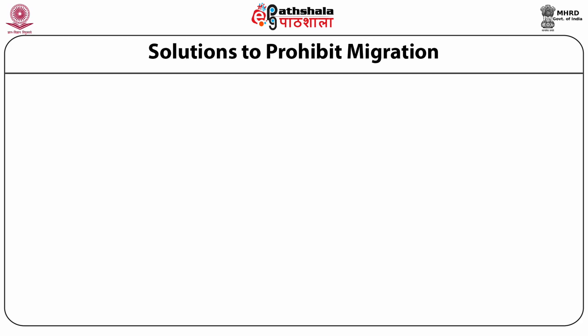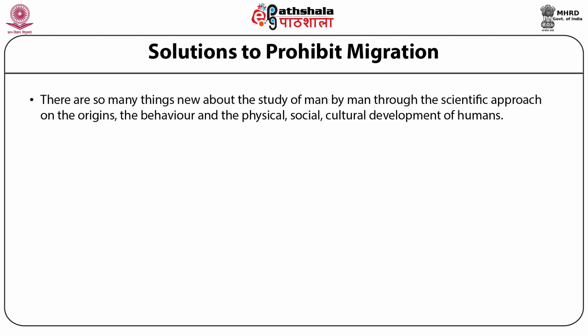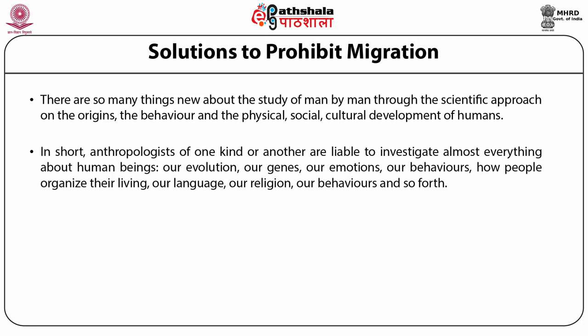Solution to prohibit migration: there are so many things new about the study of man by man through scientific approaches on the origins, behavior, and physical, social and cultural development of humans. Anthropologists using a cultural perspective view human populations as biological as well as cultural entities. In short, anthropologists are liable to investigate almost everything about human beings — our evolution, our genes, our emotions, our behaviors, how people organize their living, our knowledge, our religion, and so forth.